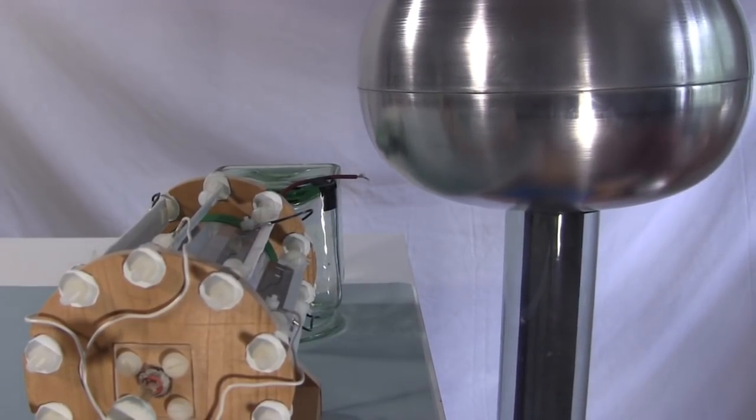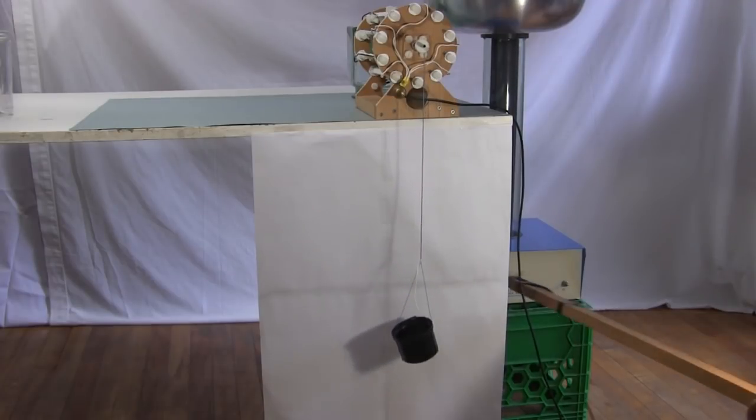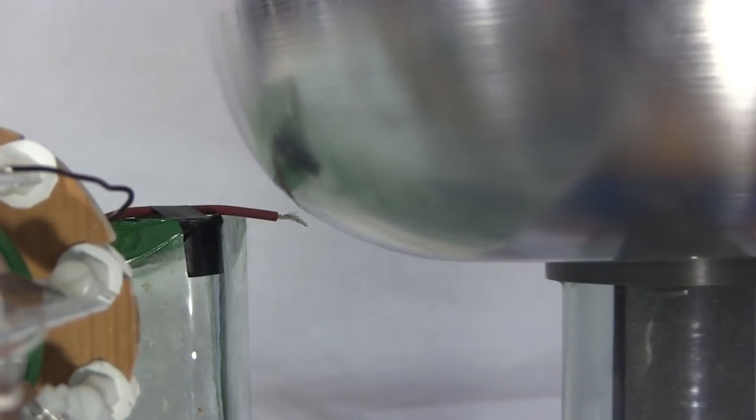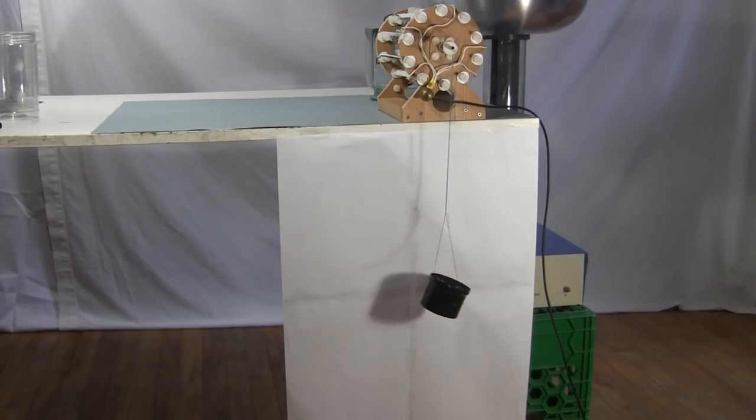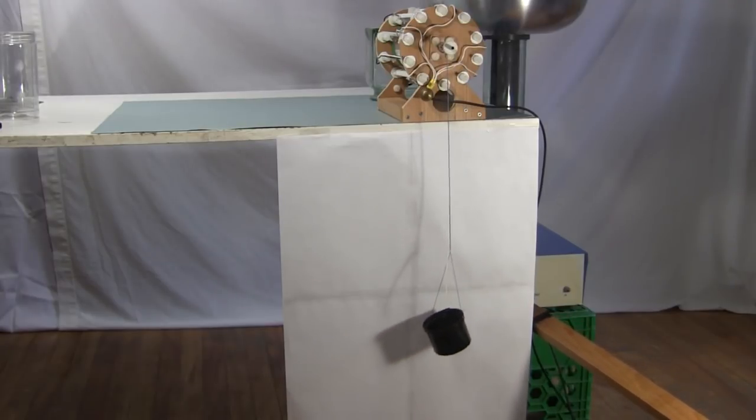I decreased the distance between the wire and the Van de Graaff's dome and try again. As you can see, it gets higher this time, so there's more torque. But with the wire end touching the dome, you can hear a crackling sound from where the wire touches the dome, which means a loss, and sure enough, it doesn't get as high.